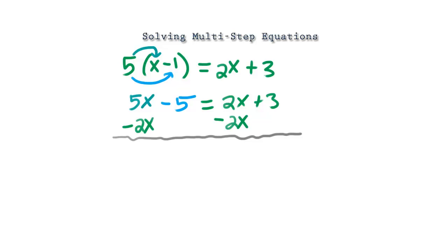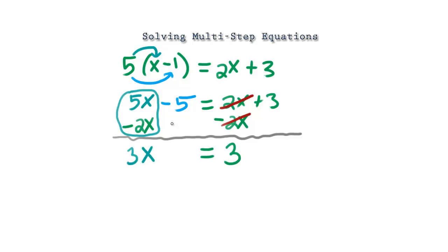The 2x and negative 2x cancel to zero, so we're left with plus 3 on the right. On the left-hand side, we have 5x minus 2x which gives us 3x, and we bring down the minus 5. So we have 3x minus 5 on the left and 3 on the right.